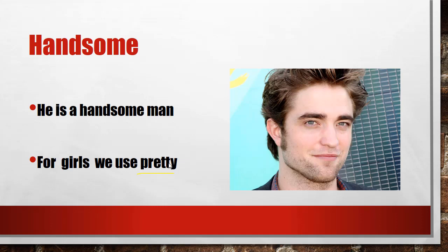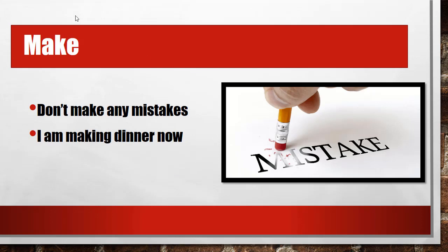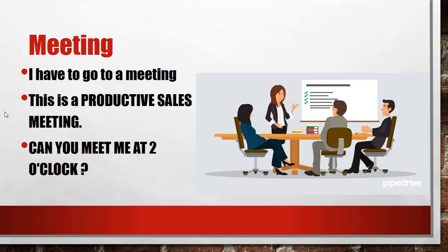And you cannot say 'she's a handsome girl' — that's wrong. For mistakes, we use 'make' — do not make any mistakes. Do not say 'do a mistake' or 'I did a mistake' — that's wrong. The correct form is: 'I made a mistake. Don't make any mistakes. I am making dinner now.'